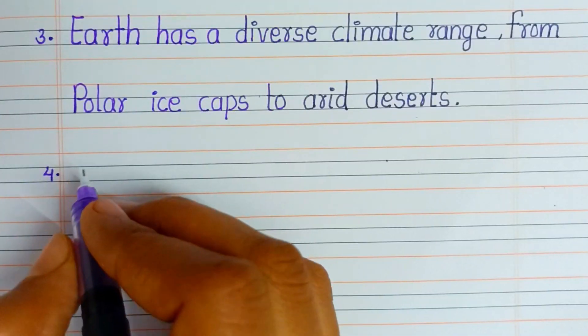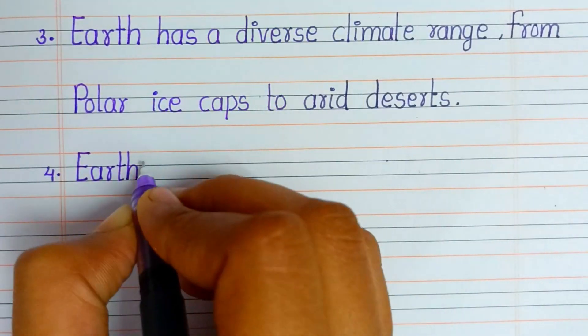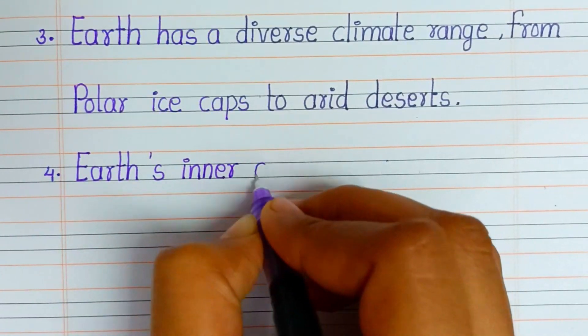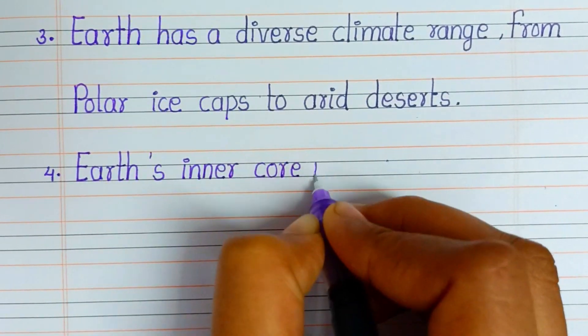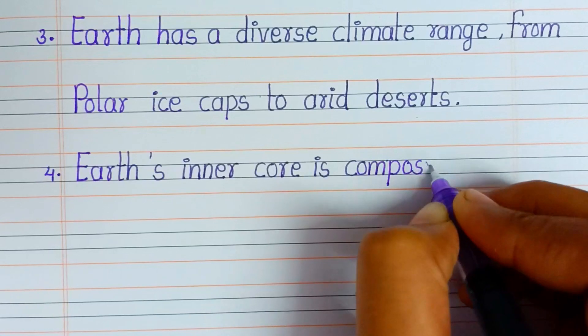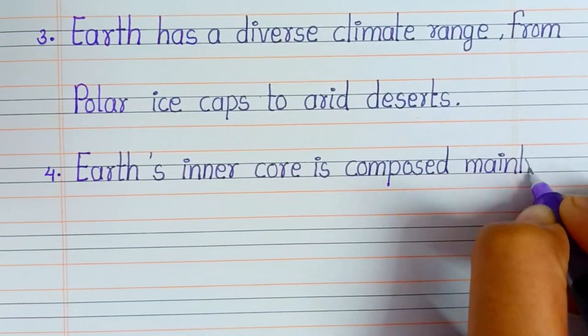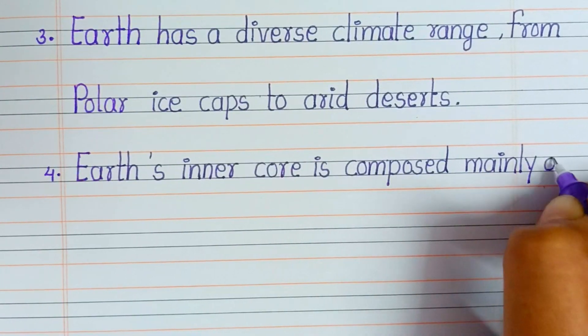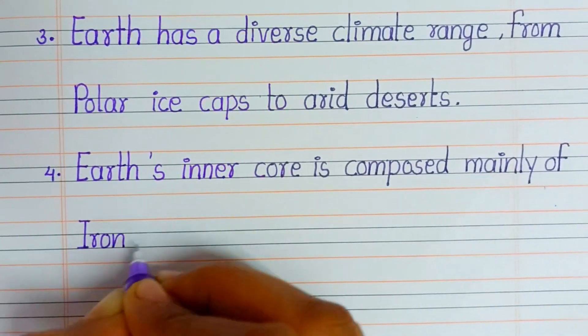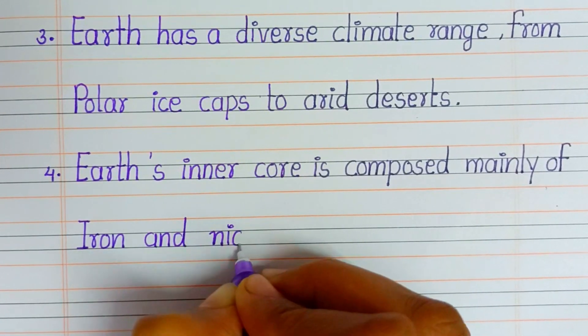Next point is: Earth's inner core is composed mainly of iron and nickel.